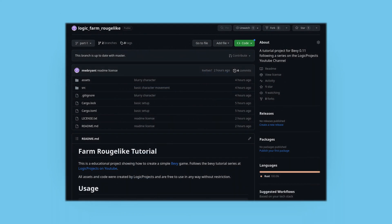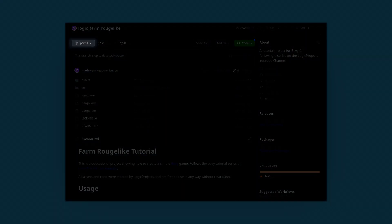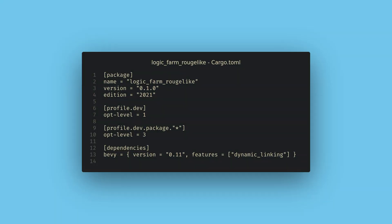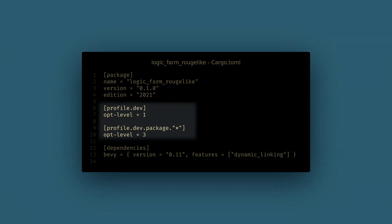Part of using the engine is making updates to keep up with its development. Each part of this series will happen on a separate GitHub branch, so check there for each part's code. I also have some other things I like to add to the TOML for working with Bevy. First up, I like to use Opt Level 3 for package code, which tells Cargo to heavily optimize our dependencies.